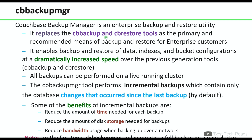cb backup mgr is an enterprise backup and restore utility. It replaces the cb backup and cb restore tools. It enables backup and restore of data, indexes, and bucket configurations at a dramatically increased speed over previous generation tools. All backups can be performed on a live running cluster. cb backup mgr by default performs incremental backups, which contain only the database changes that occurred since the last backup.